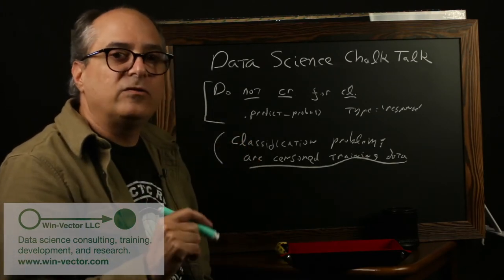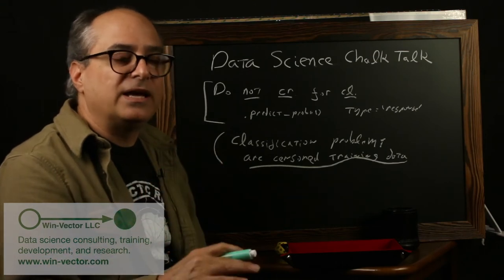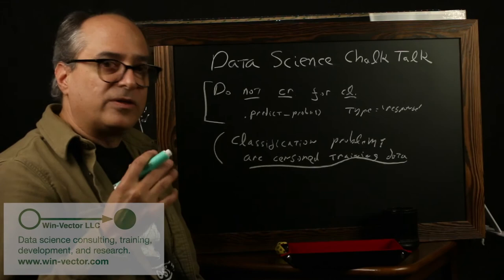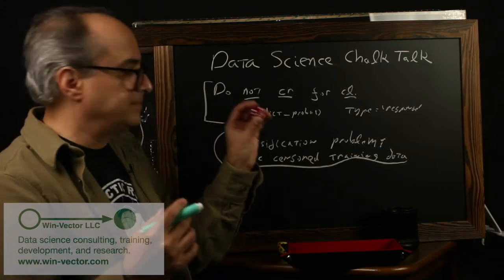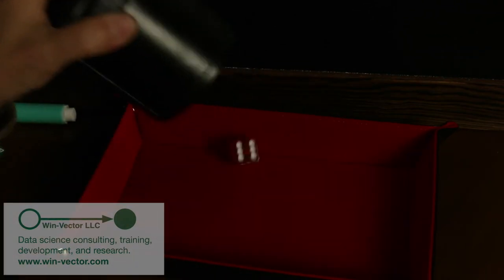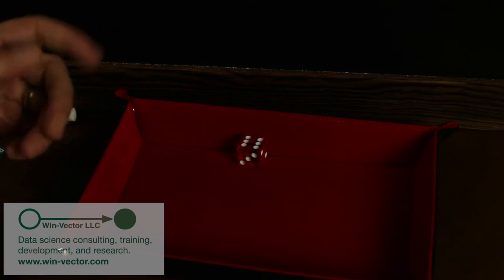But that is my advanced statement, that classification problems can be thought of as censored data. That in a perfect world, you would have been told every probability, and instead, you're merely told the outcome. Now let's work that with a concrete example using dice. Now for a dice problem, let's take the common case of a normal, fair, six-sided die.